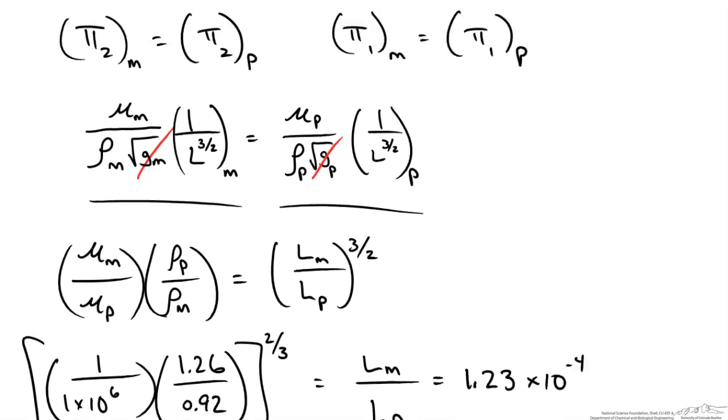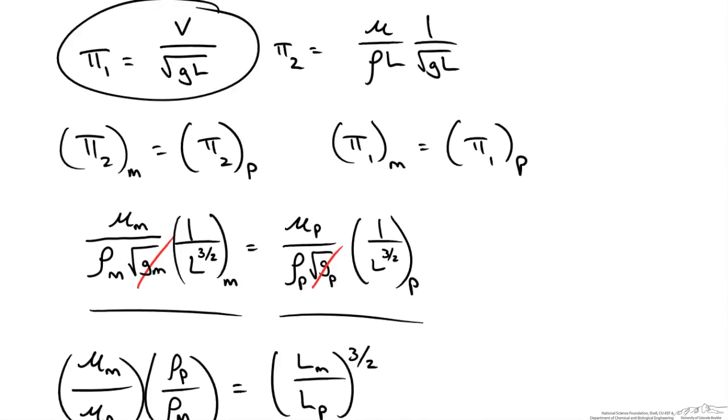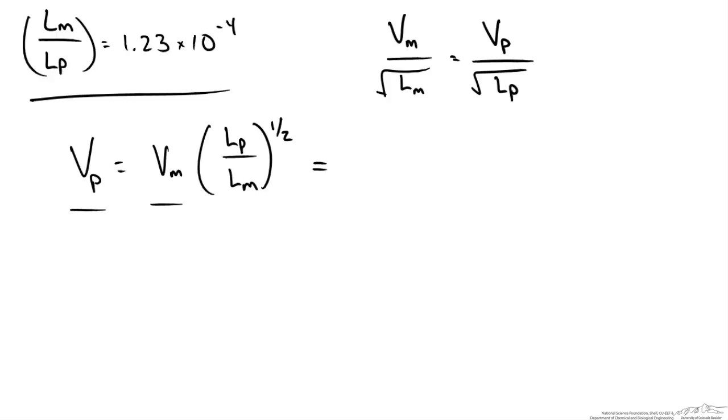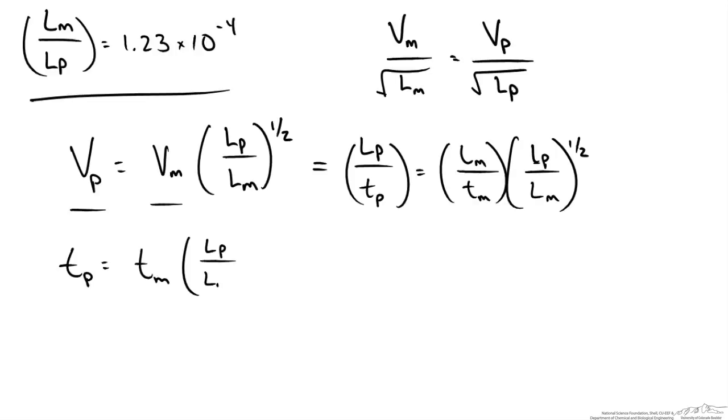Now we could go back to our first pi term and determine the difference in our velocities. So again when we set these equal we could drop the gravity term and we could rearrange this so that the velocity of our prototype which we are looking for is the velocity of our model times the ratio of LP over LM to the 1 half. So we are not given velocities. We have to rewrite this as the length of our prototype over the time, length of our model over the time of our model times this ratio. Now we are solving for the time in our prototype. So the time of our prototype is equal to the time of our model times LP over LM times LM over LP to the 1 half.